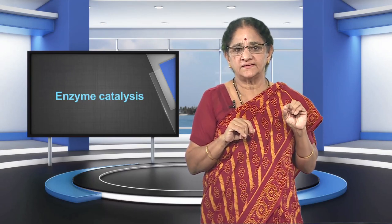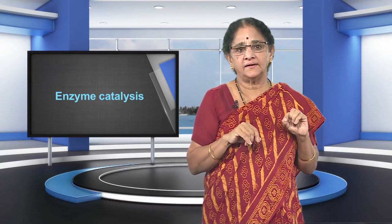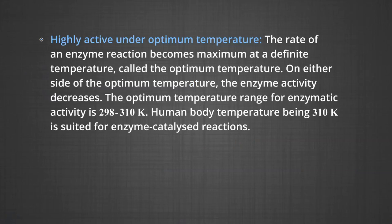The unusual specificity of enzymes is due to the presence of active sites on the surface of the enzymes. During the reaction, the molecules of substrate — that is the reactant — bind to these active sites by means of hydrogen bonds, dipole forces or other intermolecular forces of attraction. Number three, highly active under optimum temperature. The rate of an enzyme reaction becomes maximum at a definite temperature, which is called the optimum temperature. On either side of the optimum temperature, the enzyme activity decreases. The optimum temperature range for enzymatic activity is 298 to 310 Kelvin. Human body temperature being 310 Kelvin is best suited for enzymatic reactions.